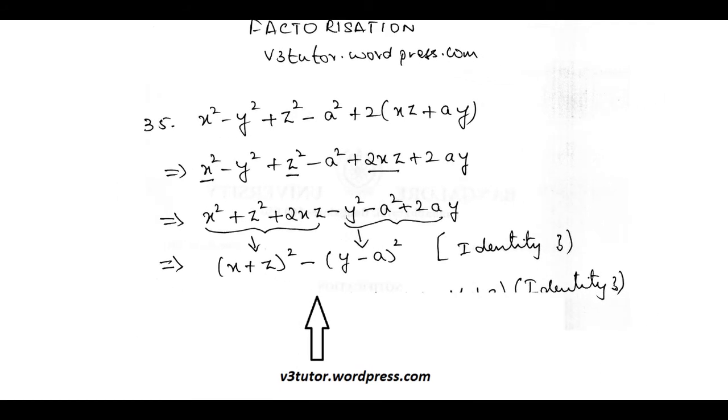I have written this as X plus Z whole squared. So your job is to identify the identity. Minus I have written this as Y minus A whole squared. Again here you have to identify the identity. Now after having done this, again I see that this corresponds to A squared minus B squared. So I again apply that identity and I solve it as X plus Z plus Y minus A into X plus Z minus Y plus A. You can clearly see why I have got different signs here.